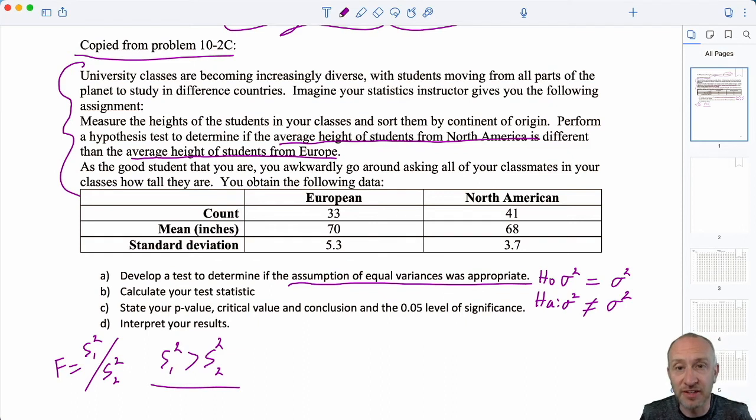So I see that the Europeans have the larger variance the larger standard deviation so that's how I'm going to set up my test. If the evidence supports the null hypothesis then the assumption of equal variances was appropriate. If the evidence supports the alternative hypothesis well maybe we might want to go back if we want to be really precise and accurate go back and redo that test and maybe we'll even get a different result.